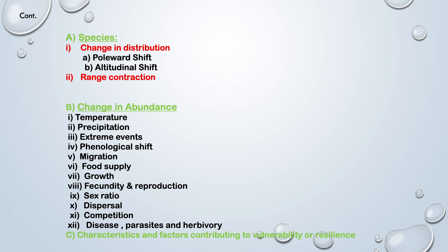Sex ratio: In many egg-laying reptiles, the sex of the offspring is determined by the temperature experienced during a critical period of embryonic development. Increasing air temperatures are likely to skew offspring sex ratios in the absence of evolutionary or plastic adaptation. Dispersal: A long-term study on the impact of temperature change on lizards showed juvenile dispersal declined dramatically over 16 years, correlated with the rise in spring temperature during development, likely elevating extinction risk of metapopulations. Competition: The difference in phenological response between different functional groups may potentially increase competition within ecosystems, for example in grasslands.